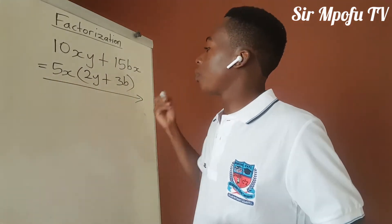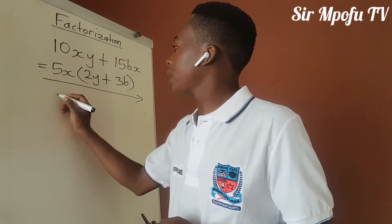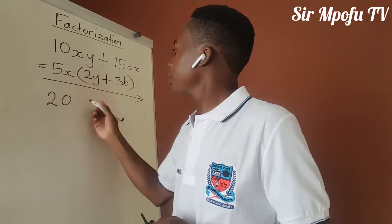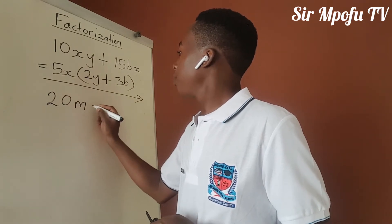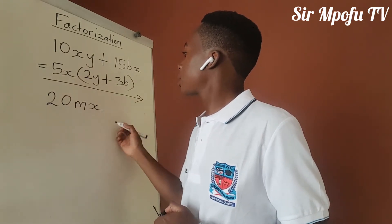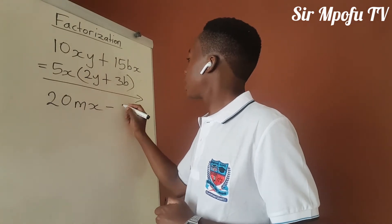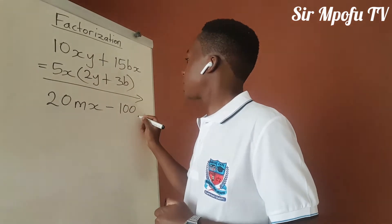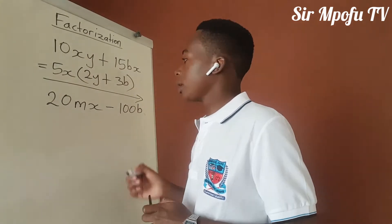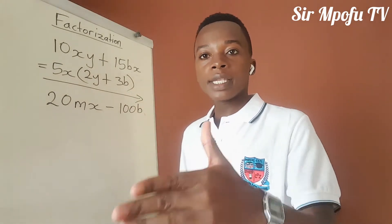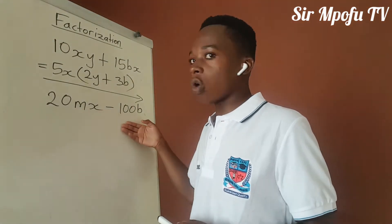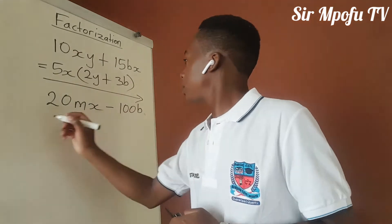Let us do another example. Let's say you have got something like 20mx minus 100b. Is it possible to factorize this? Yes, it is. What is our highest common factor here? It is 20.